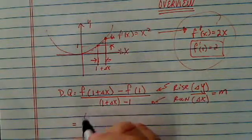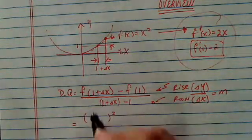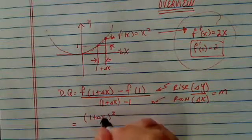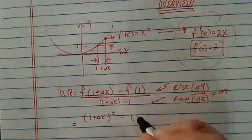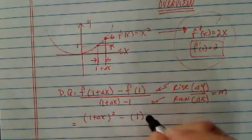For this one, since f, the function says, whatever you give me, I'm going to square it. So I have 1 plus delta x, minus 1, plug it in there, I have 1 squared.